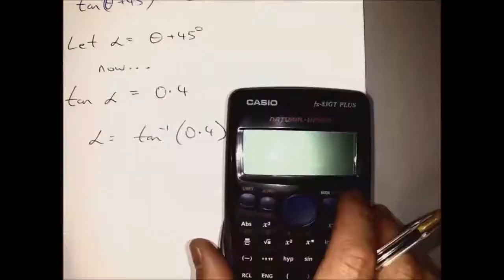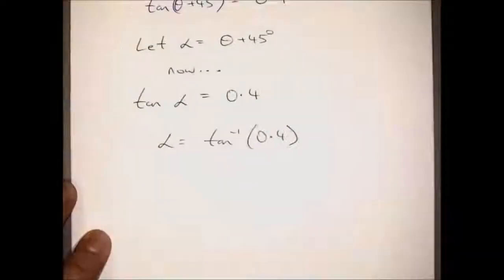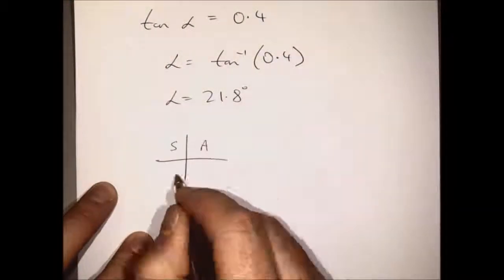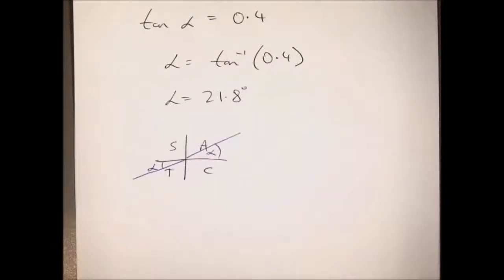So tan inverse of 0.4 gives us 21.8 degrees accurate to one decimal place. And looking at our quadrants, tan is positive there and there.